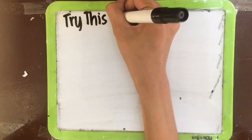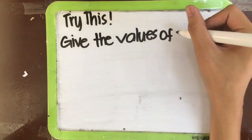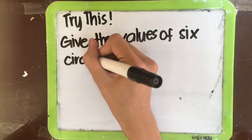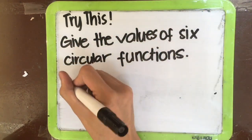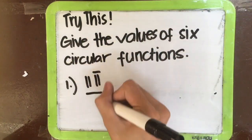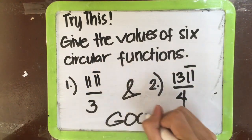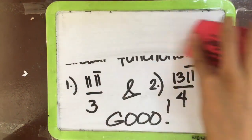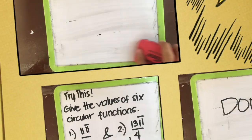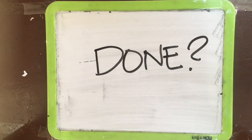Try this: give the values of the 6 circular functions of number 1, 11π over 3, and number 2, 13π over 4. Ready, set, go! Done? Let's check your answers.